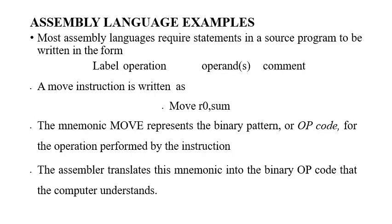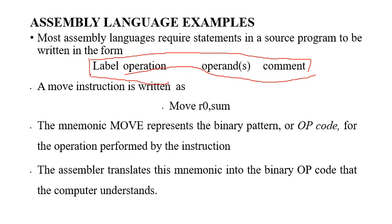In this slide, we will look into some examples of assembly language programs. Whenever you write an assembly language program you need to follow a particular syntax. The syntax has a label in the beginning, then an operation, operands, and a comment. This comment is just to help a programmer or another person understand the program written by someone else. However, whenever you compile this program, these comments will not be loaded into memory or taken forward for any processing, whereas label, operation, and operands play a major role in programming.